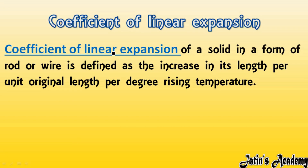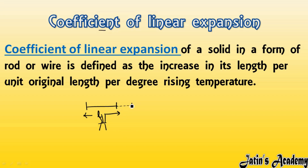Now we will discuss the coefficient of linear expansion. Consider a very thin rod having original length L. When we give heat or temperature to this rod, there is an expansion in its length. This expansion is delta L — so L is the original length of the rod, and delta L is the increase in the length after heating. Delta T represents the change in temperature.